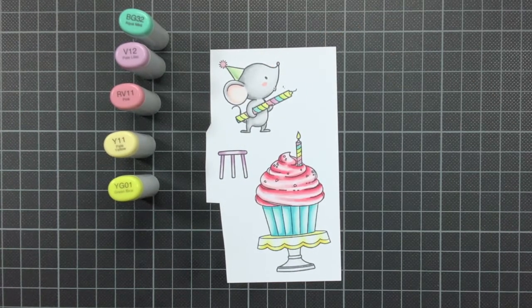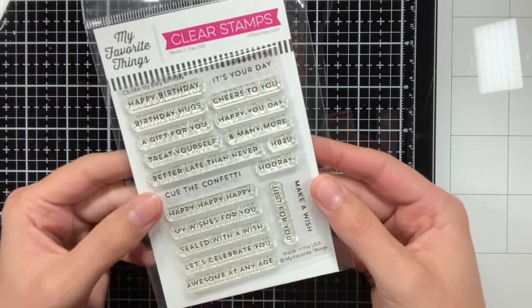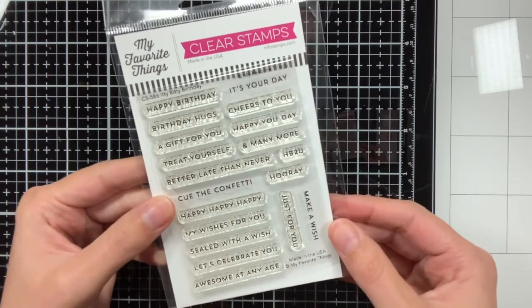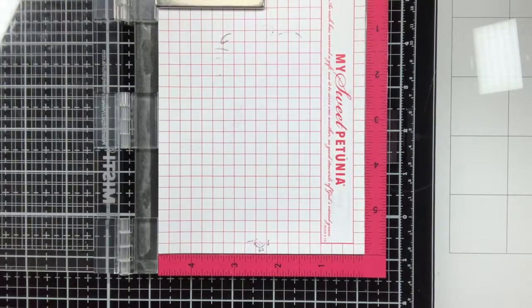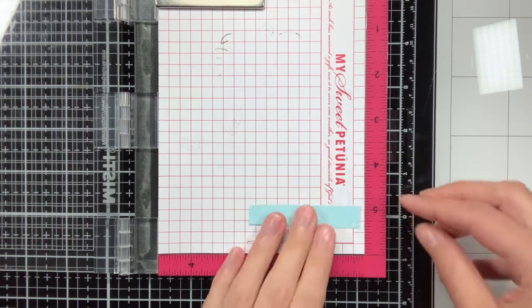Alright, that was all the coloring. Off camera I have also die cut everything with the coordinating dies. For the sentiment on the card I'm going to use the Itty Bitty Birthday stamp set, and I'm actually going to stamp 3 of these sentiments, and I'm going to stamp them on different colors of cardstock.